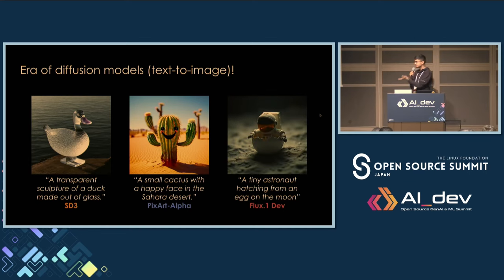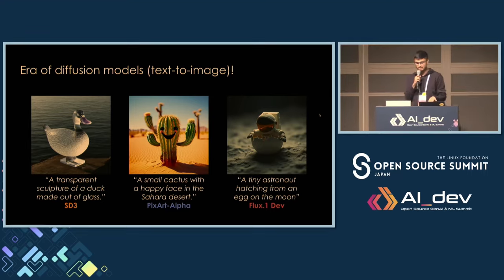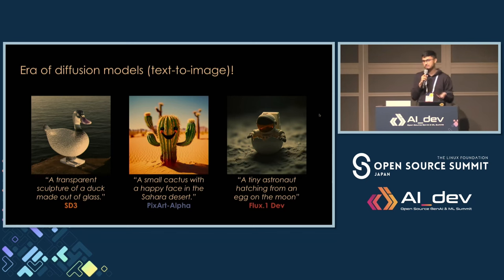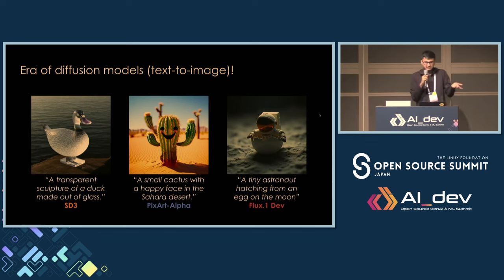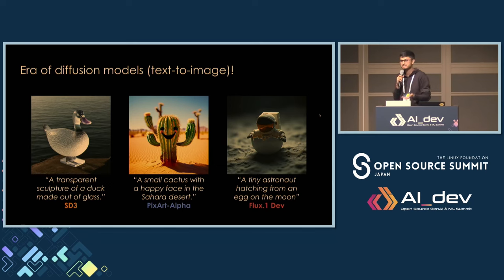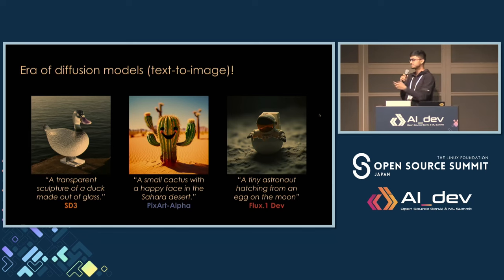Something to highlight here is that — a tiny astronaut hatching from an egg on the moon: is it even possible in reality? But these models have this exceptional ability of making sense of the prompt we give them and coming up with something as realistic as the image on the right-hand side. Like a baby astronaut — can we even think about a baby astronaut? Also, a transparent sculpture of a duck, a small cactus tree smiling. These are all very elevating and free thoughts that we're getting to see more visually with diffusion models.